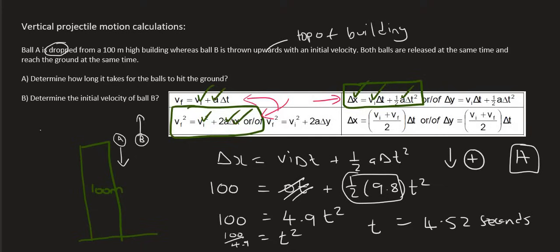So you should end up with a final answer of 4.52 seconds. So that is how long it will take ball A to reach the ground, but that's also how long it would take ball B to reach the ground.